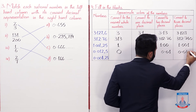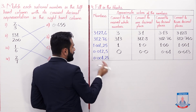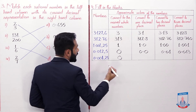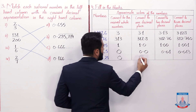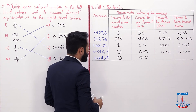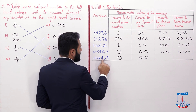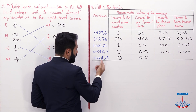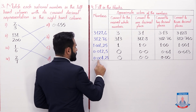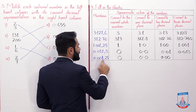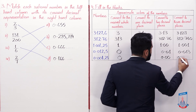The last number is 0.00125. Nearest whole number: after the decimal is 0, so we place 0. One decimal place: observe second digit — less than 5 — so 0.0. Two decimal places: the third decimal digit is 1, less than 5 — so 0.00. Three decimal places: the fourth digit is 2, less than 5, so 0.001 as it is.